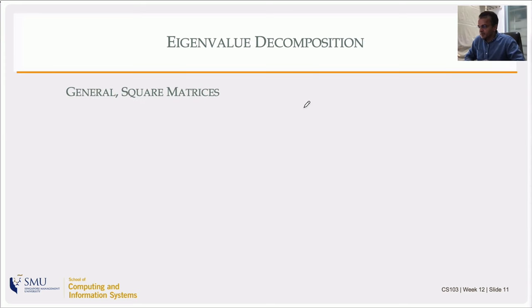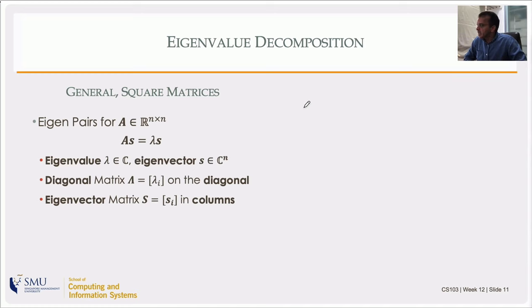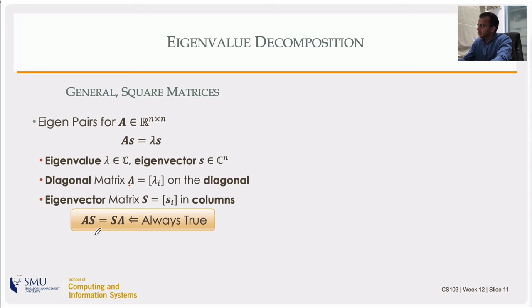For a general real square matrix, eigenvalues can be complex numbers. We saw one example — the rotation matrix in R² — where the eigenvalues turned out to be purely imaginary, and the eigenvectors were vectors over the field of complex numbers. If you place the eigenvalues in a diagonal matrix Λ and the eigenvectors in a matrix S (a complex matrix this time), the statement A = SΛ is always true — it's just the matrix version of the definition of eigenvalues.